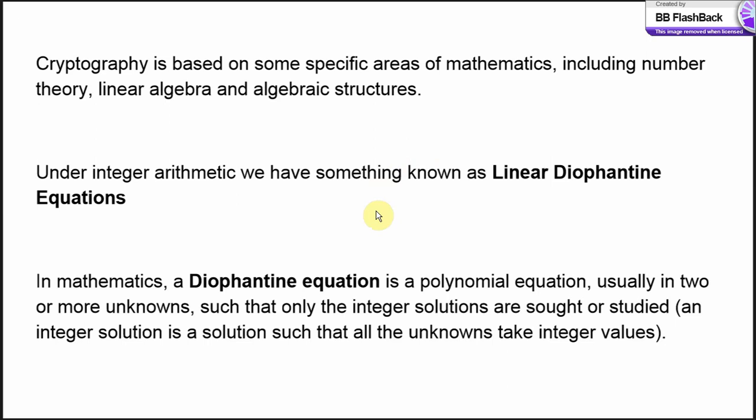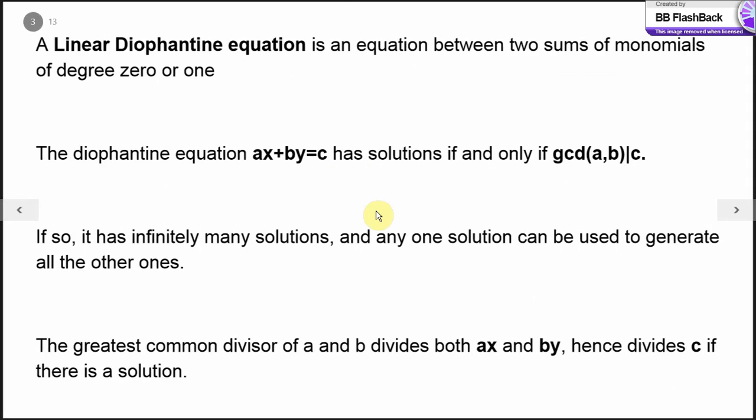A Diophantine equation is basically a polynomial equation having two or more unknowns, such that we look for only the integer values of these unknowns. The equation is of the form ax plus by equal to c, and has solutions if and only if the gcd of a, b divides c. If we find one solution for this equation, we'll be able to find infinitely many solutions.